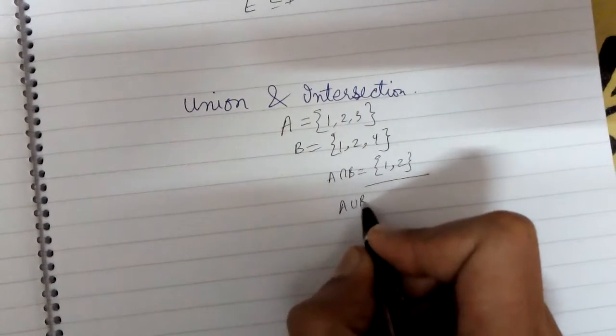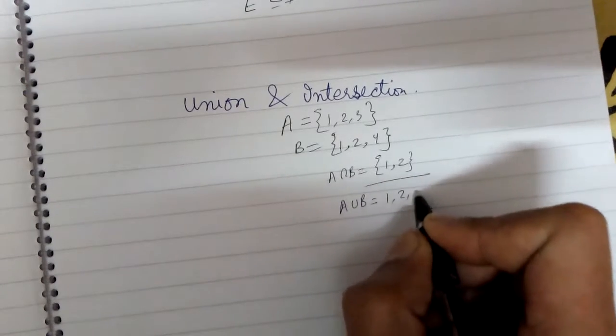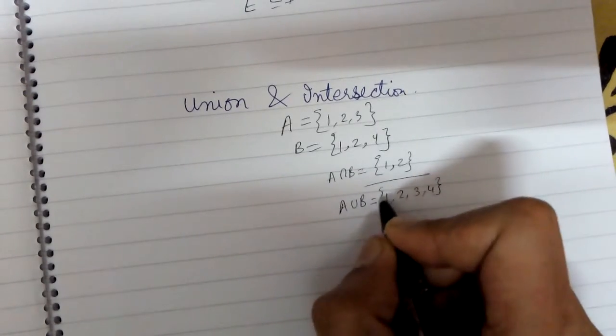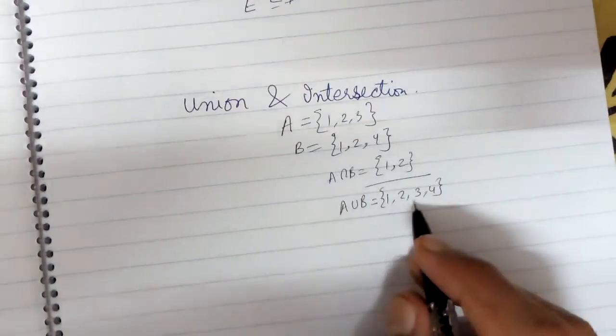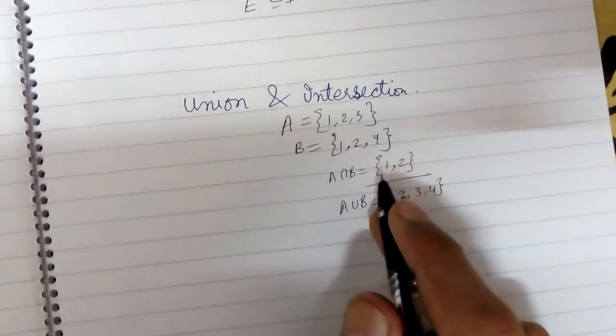And the union of them is 1, 2, 3, 4, that is the set of all the elements which are present in both of them.